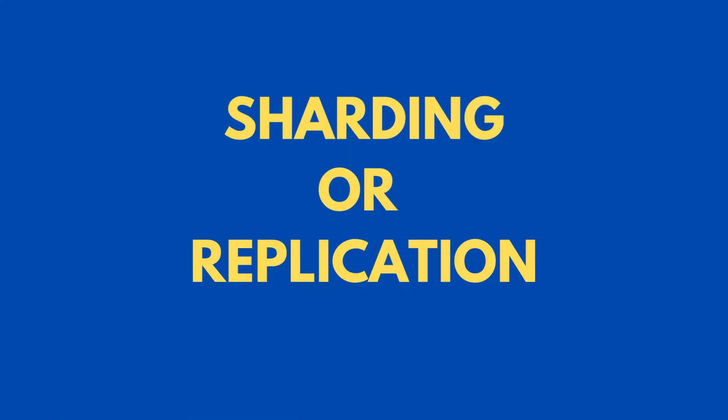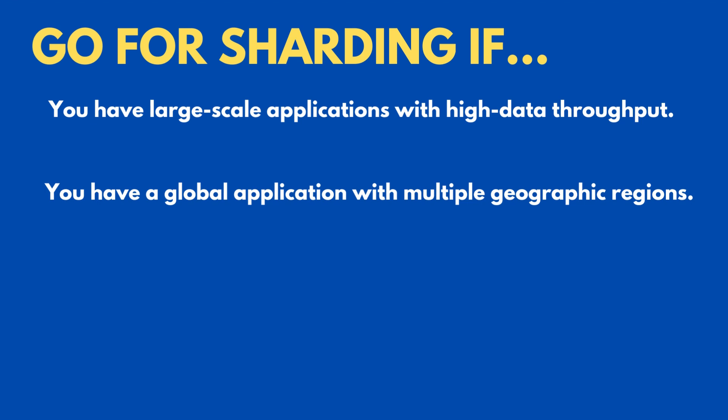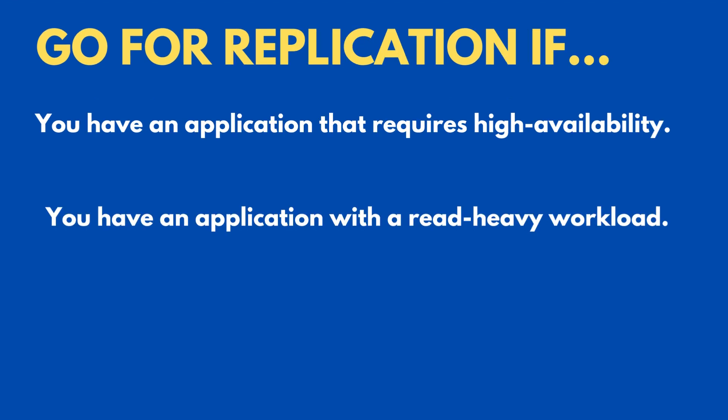So how do you choose the right approach for your case? Here are a few tips. Go for sharding if you have large-scale applications with high data throughput — think of social media platforms, online marketplaces, and gaming apps. Since these apps need to handle high data volumes, sharding helps them distribute the load across multiple servers. Second, if you have a global application with multiple geographic regions, sharding is the best option. In this scenario, you can shard the data based on geographic location, ensuring that users always access data from servers that are geographically closer — in other words, improved performance and reduced latency.